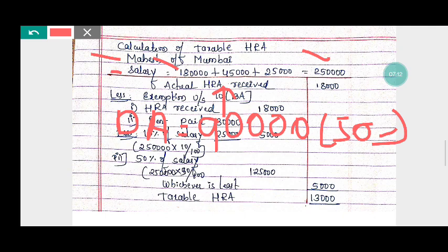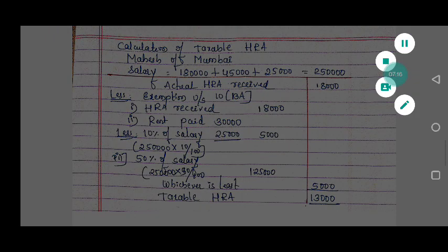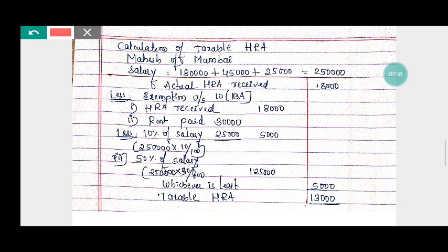In the HRA calculation, salary is Rs 2,50,000. Next, actual HRA received — the actual house rent allowance received by Mahesh is Rs 18,000. Less exemption under Section 10 sub-section 13A. First — actual HRA received is Rs 18,000.